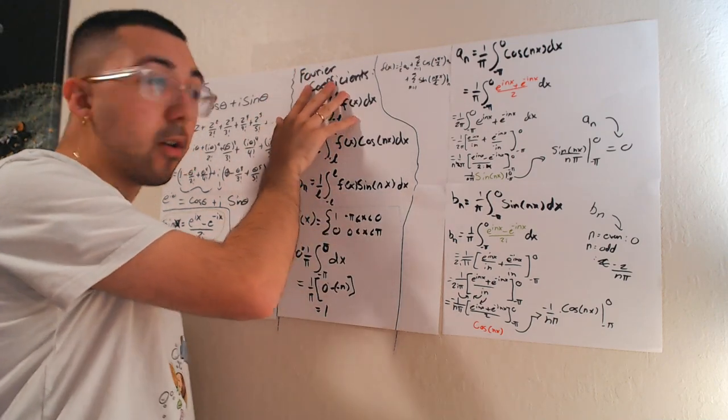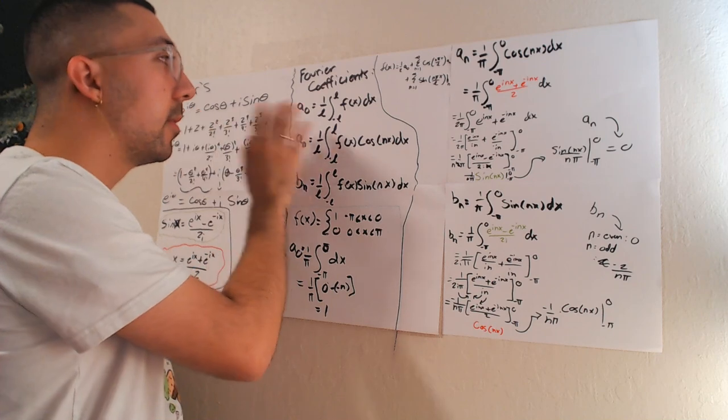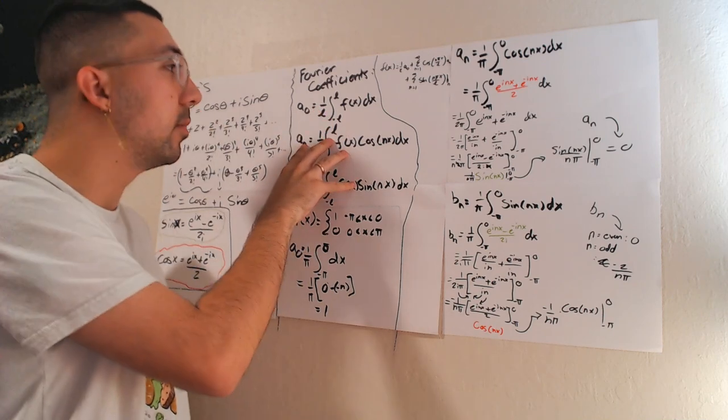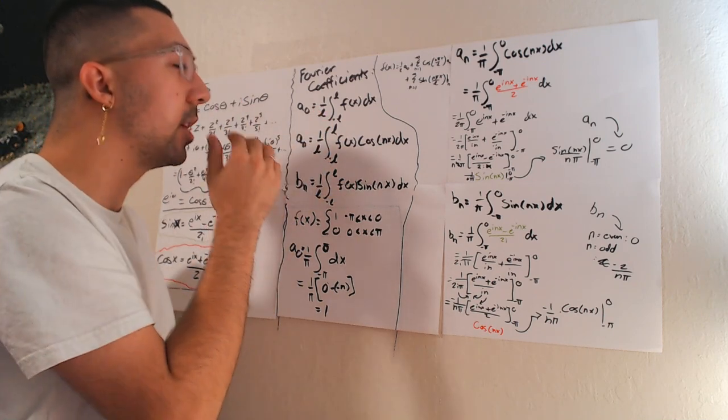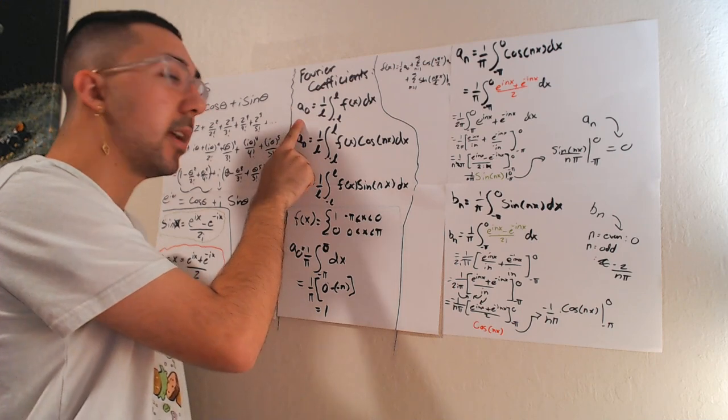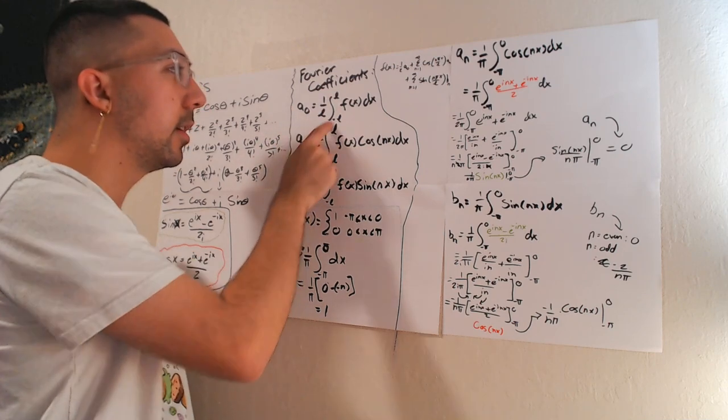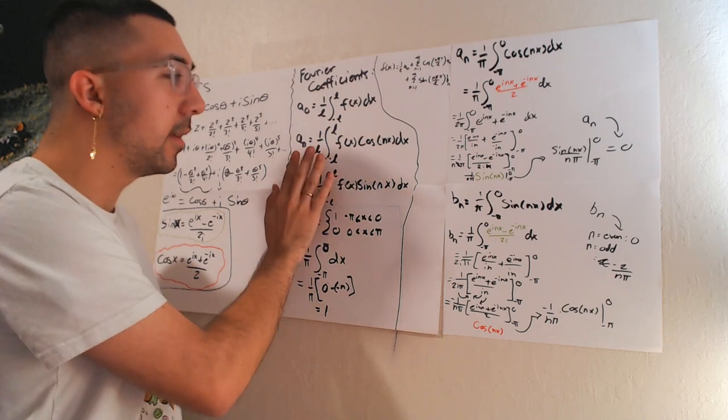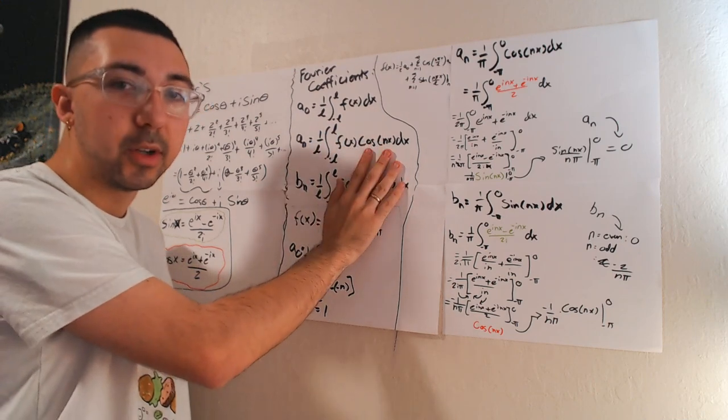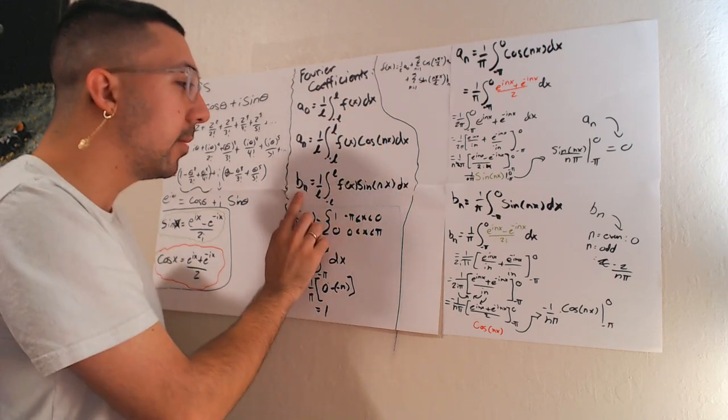Fourier coefficients are something that we're going to have to find when we write out a Fourier transform. So we have a sub not equal to 1 over L, integral from negative L to L, f(x) dx. The same thing for a sub n, but with cosine nx times that, and b sub n is the same thing but with sine of nx times that.